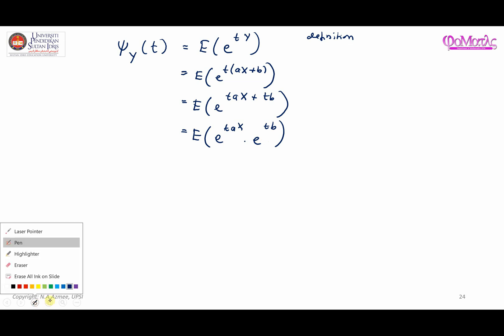Notice that this guy here, e^tb, is a constant because it doesn't depend on X. Remember, X is a random variable and clearly this is a constant. We have learned in mathematical expectation that if you have E(aX) where a is a constant, the result can be written as a E(X). So we are going to follow the similar idea.